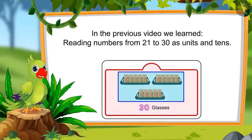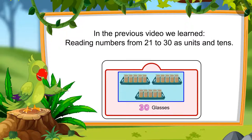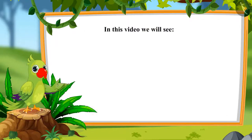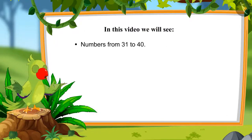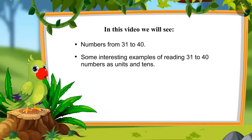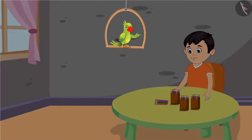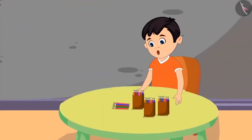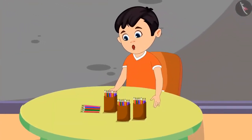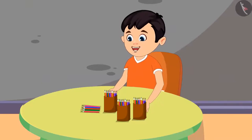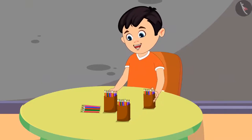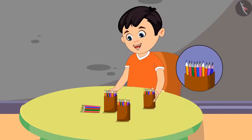In the previous video, we learned numbers from 21 to 30 and read those numbers as units and tens. In this video, we will see some interesting examples of reading numbers from 31 to 40 and reading those numbers as units and tens. Today, Chotu went to buy pencils from the market. Let us see what he is doing with it now. Chotu says: now I have a lot of pencils with me. I will count all the pencils.